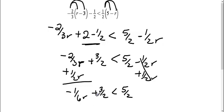Then I need to still get this r by itself, so I have a positive three-halves here, so I'm going to subtract three-halves on both sides. So I'm going to have a negative one-sixth r is less than five-halves minus three-halves is two-halves, which is just one.